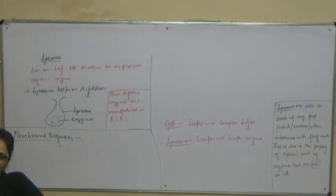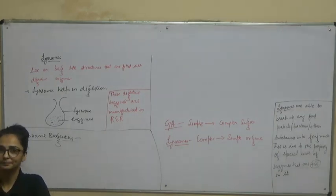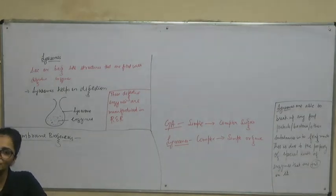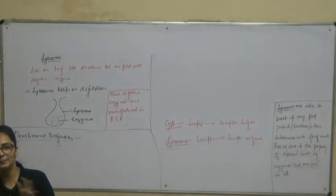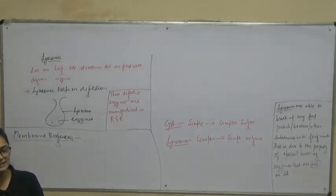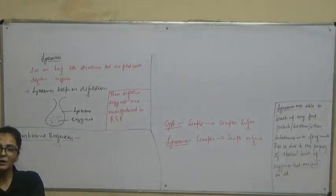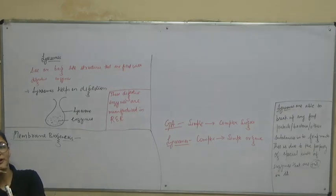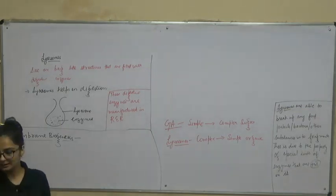The endoplasmic reticulum forms a complex cellular machinery by joining with the nucleus or the Golgi apparatus. The Golgi apparatus is related to the work done by endoplasmic reticulum, and lysosomes are also related to the work done by endoplasmic reticulum — because all the enzymes present in lysosomes are made by the endoplasmic reticulum.